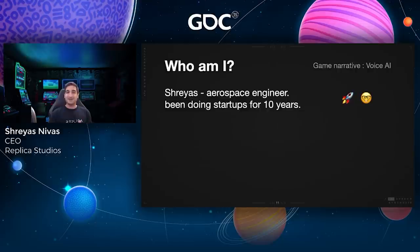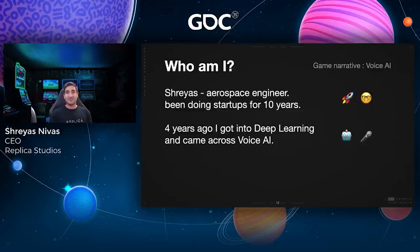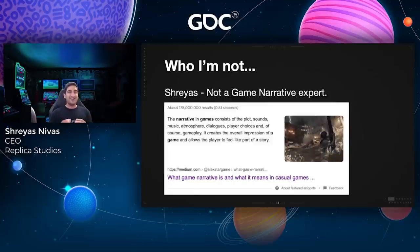My name is Shreyas. I started my career as an aerospace engineer, so yes, I'm a bit of a nerd. I've been doing startups in hardware and software for about 10 years. About four years ago I got into deep learning, specifically voice AI, and around the same time I met my co-founders and we started Replica. Four years ago we saw the enormous potential that voice AI has for creative people, and we thought we would set out and build Photoshop for voice. Outside of work I like playing drums and racing games — I also like to race in real life.